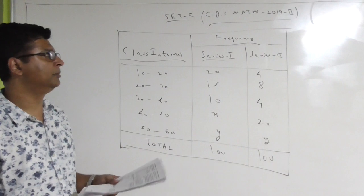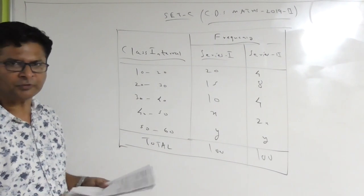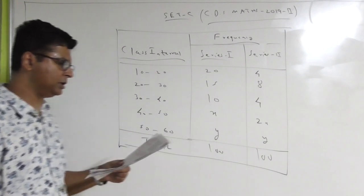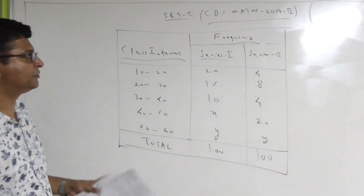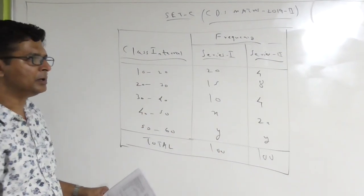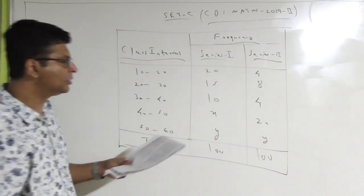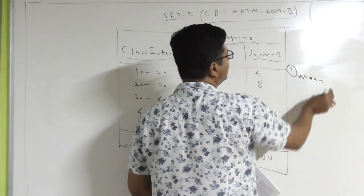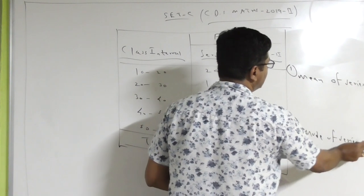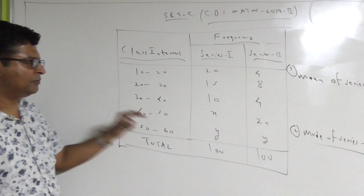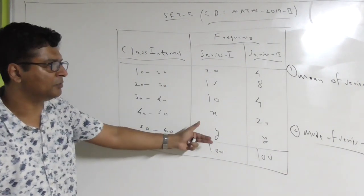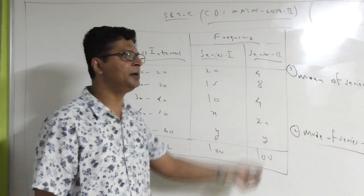Now coming to a question from data interpretation — the particular part I was talking about in the first half. These are some questions where people found difficulty. There is a frequency distribution table for two series of observations: series 1 and series 2. Frequencies are given along with class intervals, with total frequency = 100. The first part asks for the mean of series 1, and the second part asks for the mode of series 2. The values X and Y are unknown.